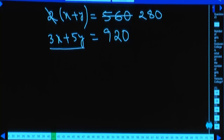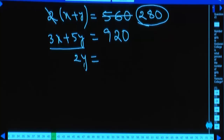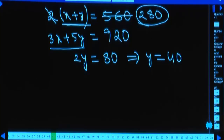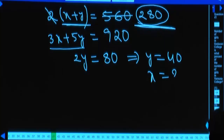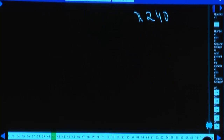We can write 3x + 5y as 3x + 3y + 2y. Since x + y = 280, three times that is 840. Then 2y = 920 - 840 = 80, so y = 40. Substituting y = 40 into x + y = 280 gives x = 240.